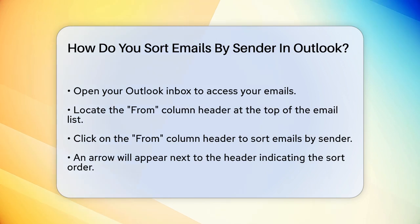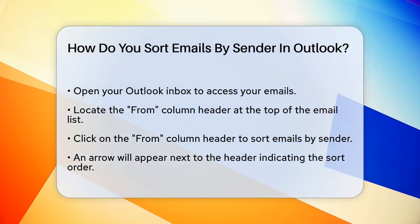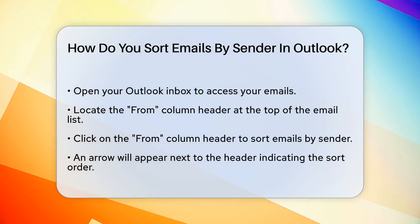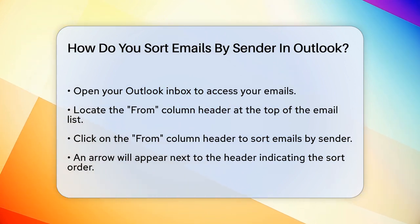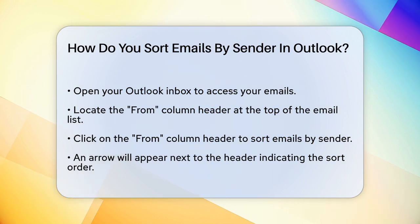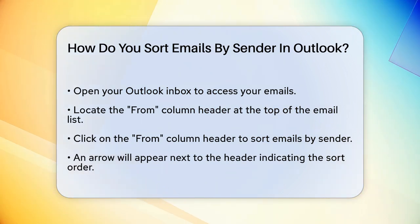First, open your Outlook inbox and look at the top of the email list. You'll see a column header labeled From — this is where the sender's name or email address is displayed. To sort your emails by sender, click on the From column header.